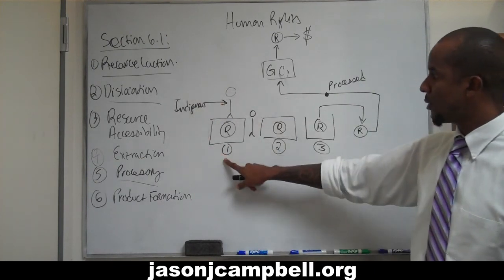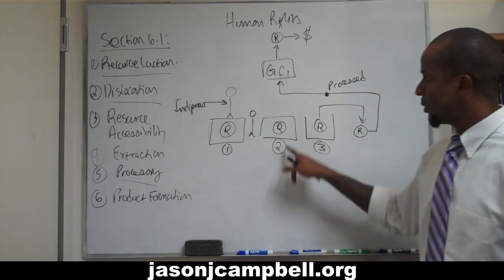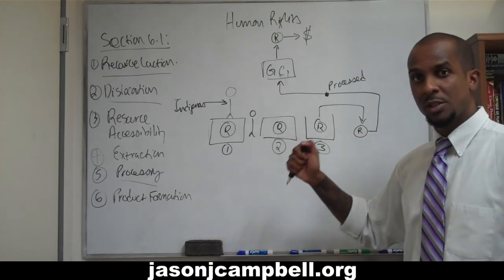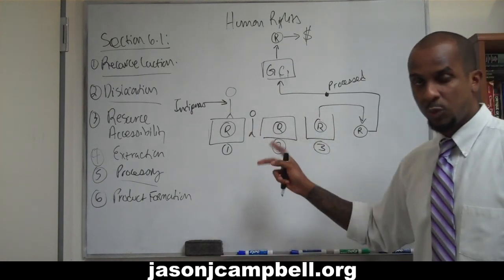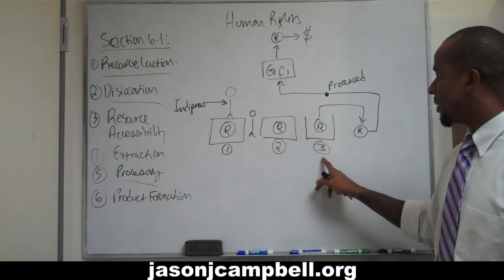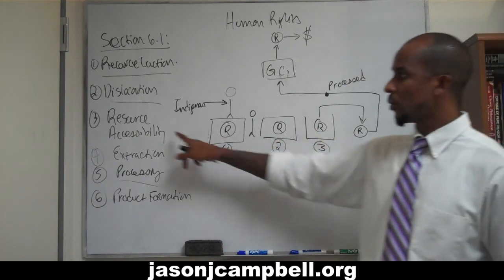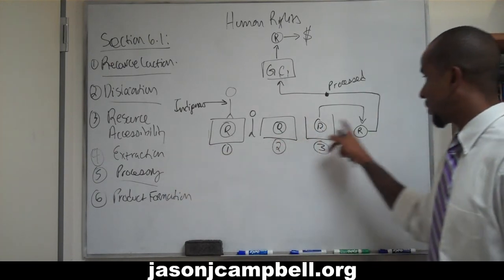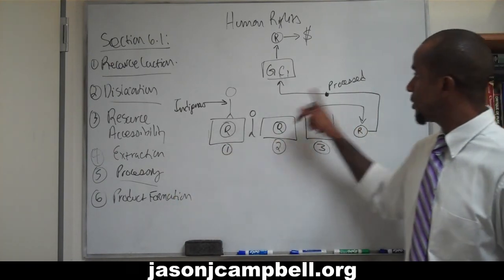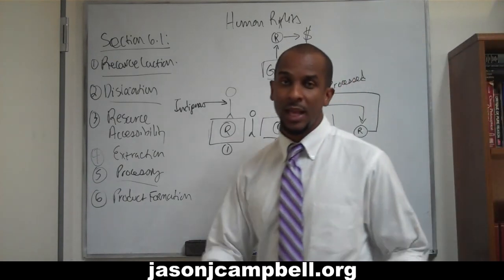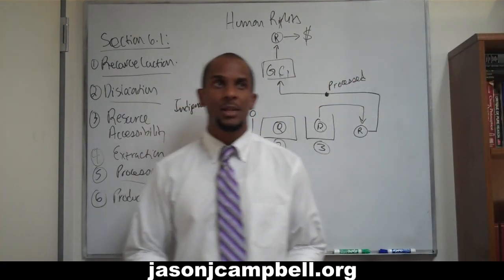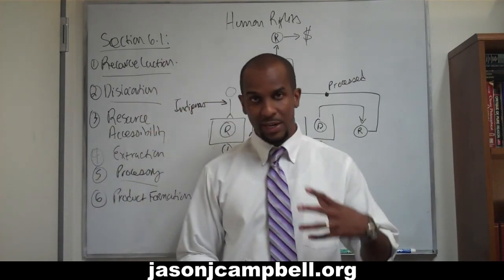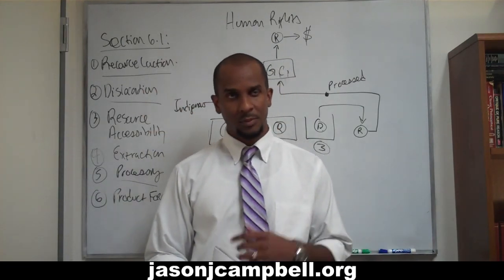So to summarize: one, locate a resource; two, dislocate the population — and dislocation can be forced migration or even forced extermination; three, access the resource; four, extract the resource; five, process the resource; six, turn a profit. That's how you generate capital. The argument is that global capitalism is inherently exploitative in its worst sense.